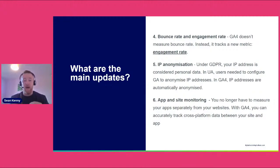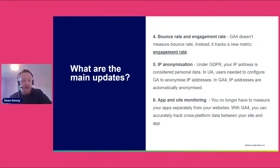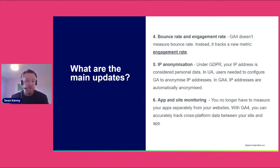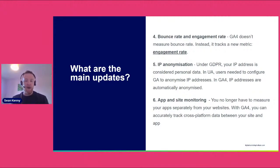Engagement rate is a much more meaningful data point in and of itself. Bounce rate didn't really tell us quite a lot — it actually missed quite a lot, because if people did do something meaningful, it would still count them as bouncing off one web page if they didn't engage with any others. Another big update is IP anonymization. Because of GDPR changes and upcoming policies around tracking using cookies, IP addresses being available to the older tracking system became an issue. In Universal Analytics, users needed to manually configure Google Analytics to anonymize IP addresses. But this is now automatic in Google Analytics 4 — IP addresses are not recorded; they're automatically anonymized.